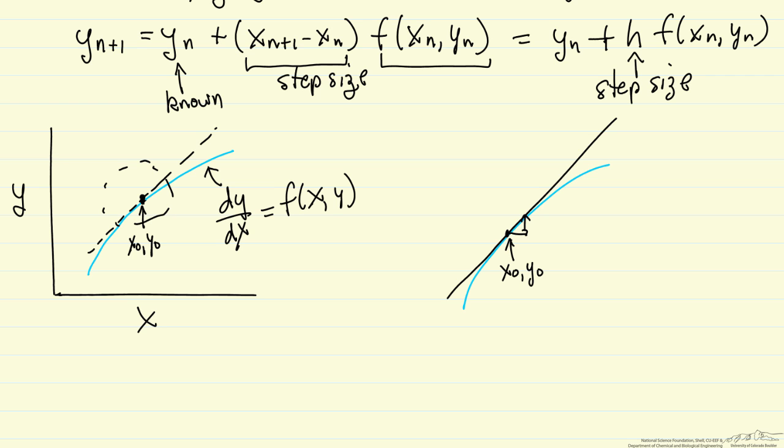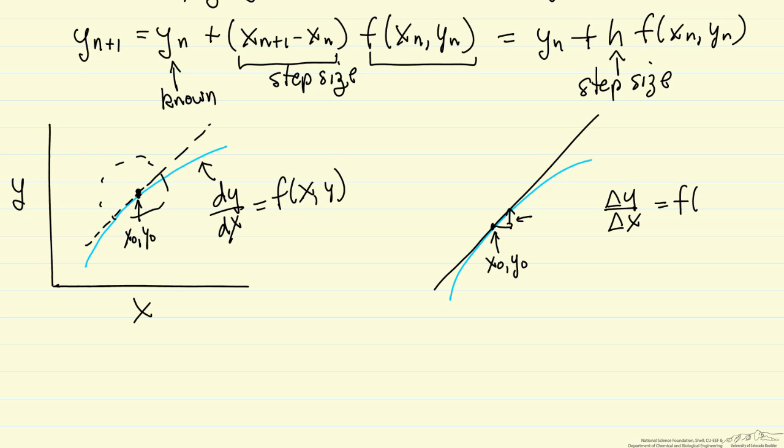And what we're doing is assuming delta y over delta x equals that function evaluated at this point. In this case, x0, y0. And of course, that's true at any point as we step through.